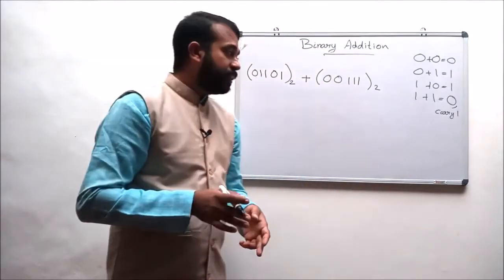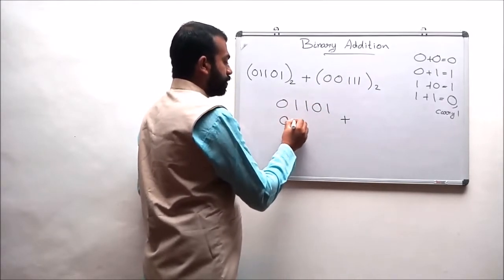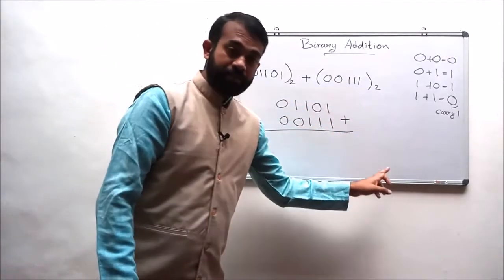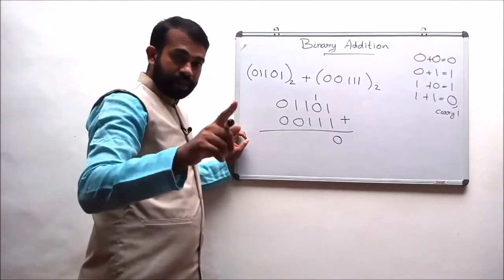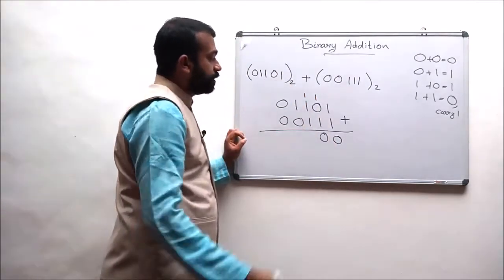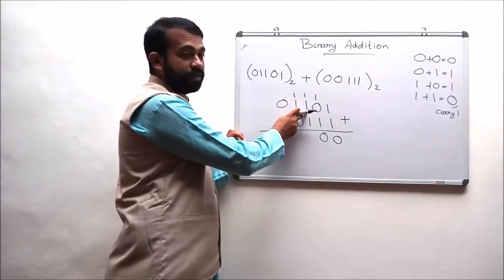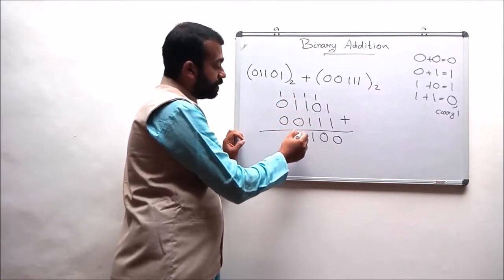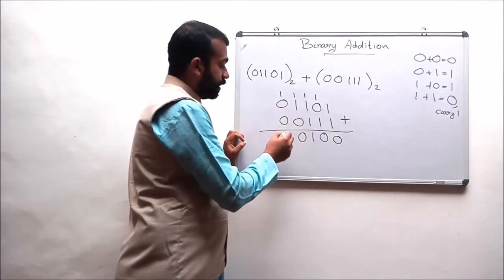Let us consider the third example: 0 1 1 0 1 plus 0 0 1 1 1. When we are adding, the addition is started from the LSB. 1 plus 1 will result in 0 with a carry of 1. And 1 plus 0 is 1, and that 1 adding with 1 will result in 0 with a carry of 1. So 1 is carried to the next position. 1 plus 1 is 0; that 1 is carrying to the next position. And 0 plus 1 will result in 1; 1 plus 1 is 0 with a carry of 1. That 0 is added with 0. And 1 plus 0 is 1, and 1 plus 0 is again 1.